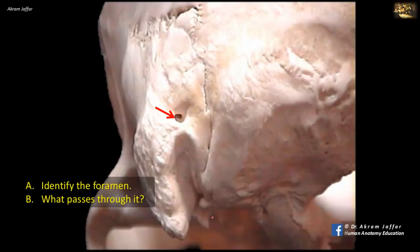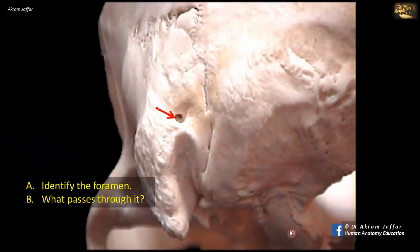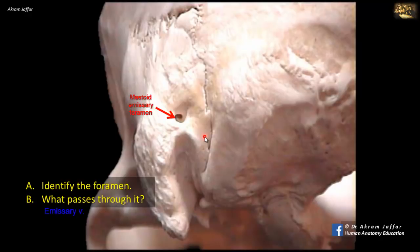This foramen is viewed from the posterior aspect of the skull. You can see here part of foramen magnum, the condylar process, and the mastoid process. The foramen is located just behind the mastoid process in the temporal bone, and it's called the mastoid emissary foramen. This foramen is not always present; it might be present unilaterally or bilaterally, and sometimes multiple foramina might be present. It transmits an emissary vein. Emissary veins connect the veins of the scalp with dural venous sinuses inside the skull, and they are a possible route for the spread of infection from the scalp veins into the sinuses of the skull.